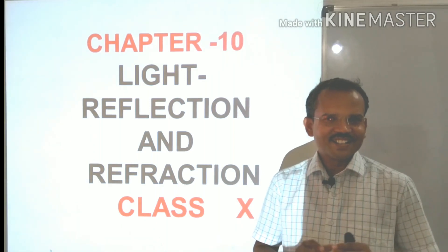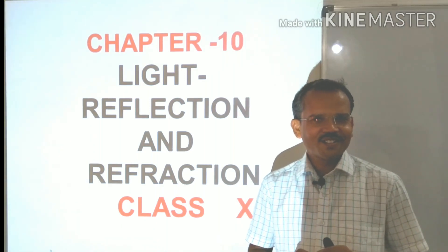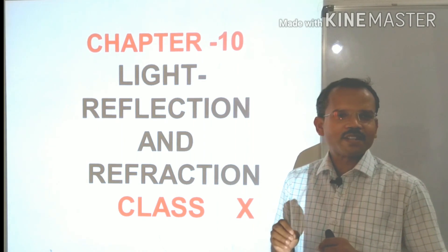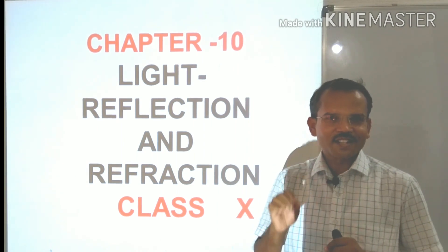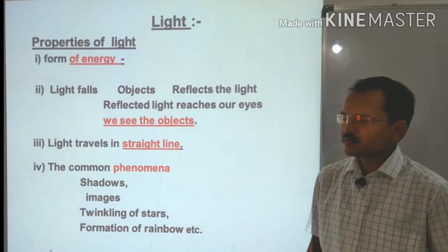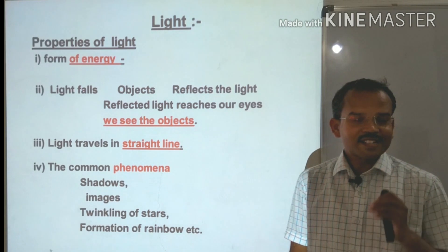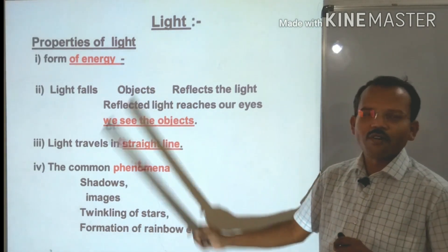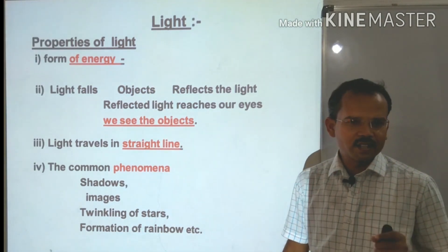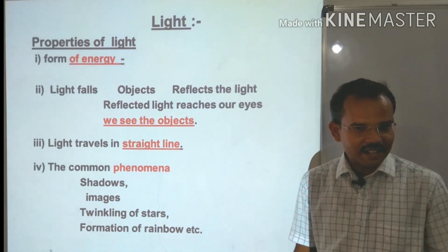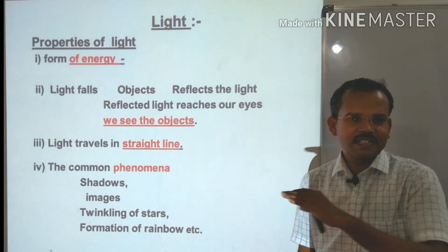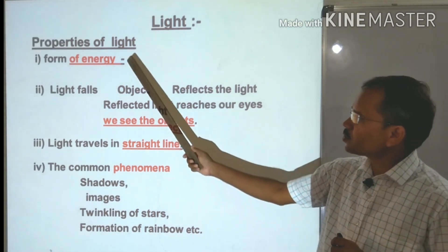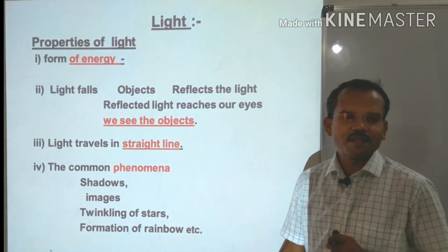Hello dear students, today we are going to learn lesson number 10 — Light: Reflection and Refraction. Let us start with the properties of light. The first property is that light is a form of energy, as we are familiar — electrical energy converts into light energy, and light energy into heat energy.